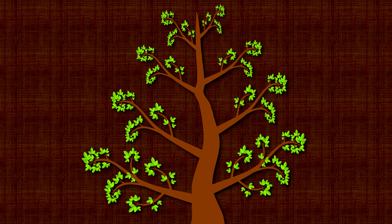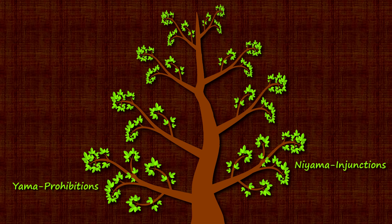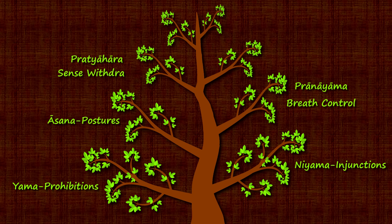The first anga, yama, consists of prohibitions against adharmic, or unethical deeds. The second anga, niyama, is comprised of injunctions to develop various dharmic virtues. These first two angas direct you to control your behavior. The next three angas — asana, pranayama, and pratyahara — mandate certain kinds of control over your body, your breath, and your senses, respectively.